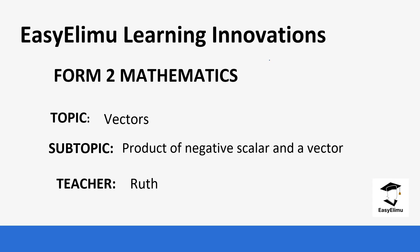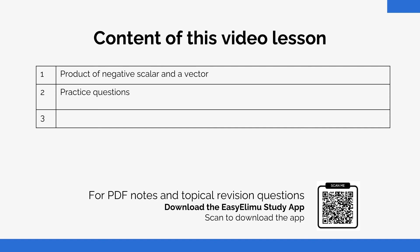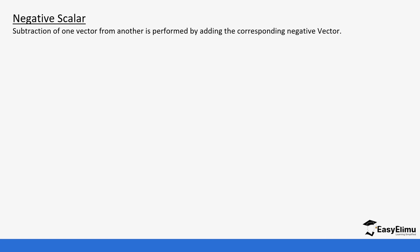Welcome to EZLM Learning Simplified. My name is Ruth and today we are going to be learning from Two Mathematics. Our topic for today is vectors — specifically the product of a negative scalar and a vector. Previously we looked at the product of a positive scalar and a vector. Now we look at the situation where we have a negative scalar and how we work out these vectors.